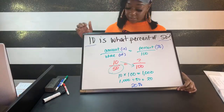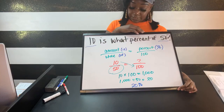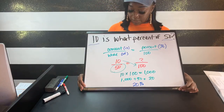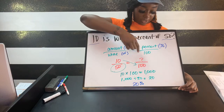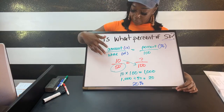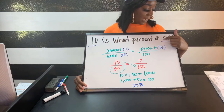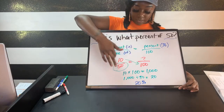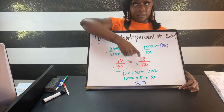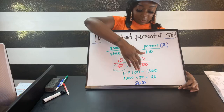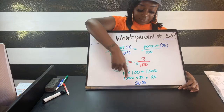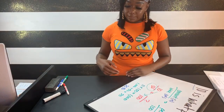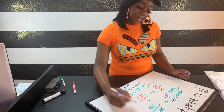Just to go back to the original question: 10 is what percent of 50? We always do our setup first — amount over whole equals percent over 100, with 100 always given. 10 is the amount (before 'is'), 50 is the whole (after 'of'), so we plug them in. Cross multiply: 10 times 100 equals 1,000, divided by 50 gives us 20. The answer is 20%. I always recommend going back to check your answer.